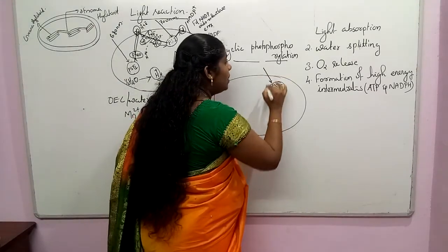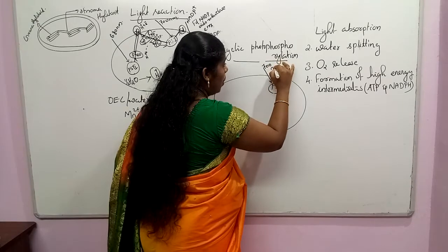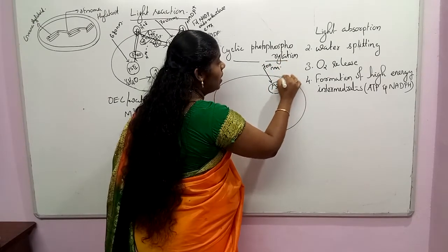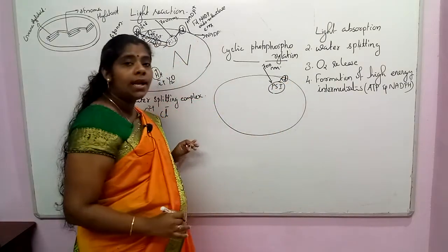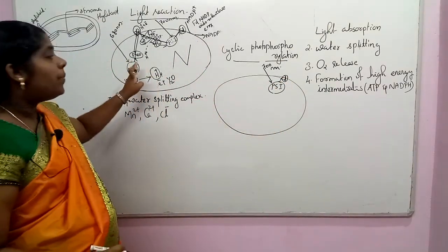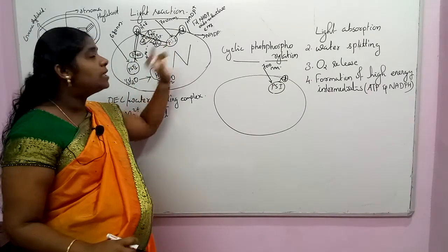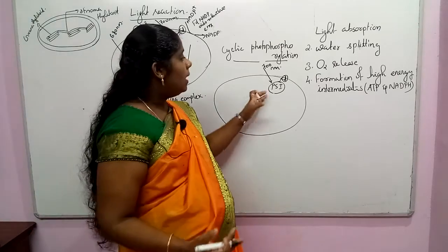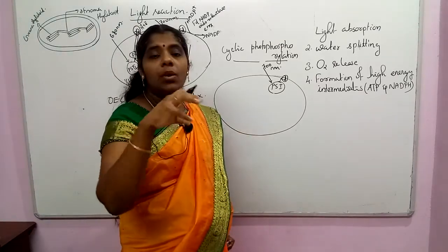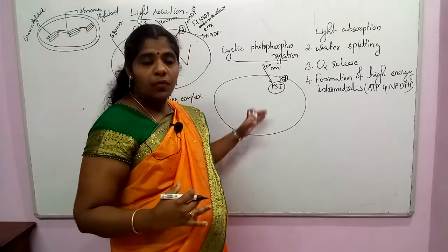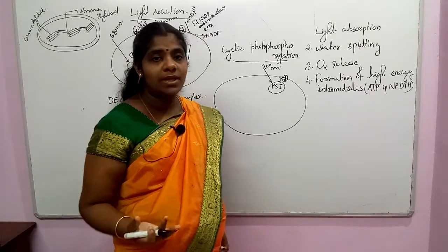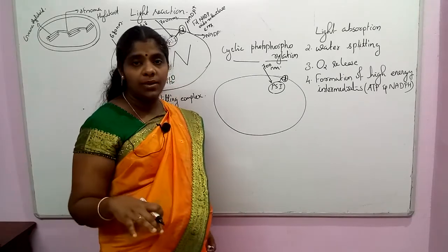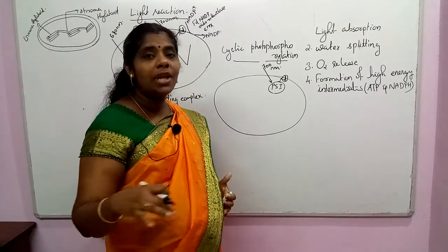We can see the electron it is emitting in this region, and it passes through the ferredoxin. This ferredoxin is present in this region. The electron in PS1 — we know that both electrons are present in this region. If there is a deficiency of one electron, that electron which is present is in PS2.